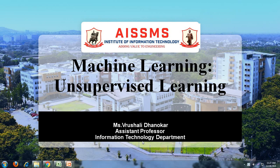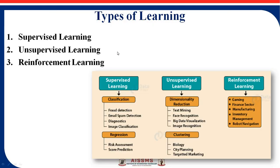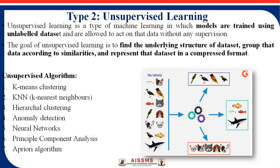So let's see what exactly unsupervised learning is. As we discussed in the last session, there are three types of learning: supervised learning, unsupervised learning, and reinforcement learning. We already learned the supervised learning technique in the last session, so here we will learn about unsupervised learning. Basically, unsupervised learning is a type of machine learning algorithm.